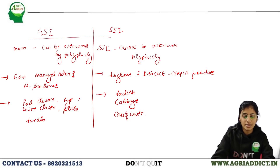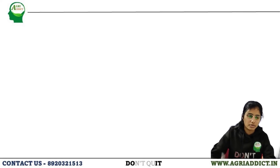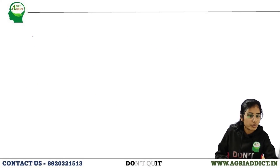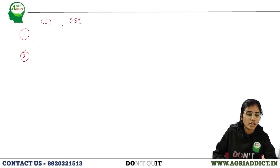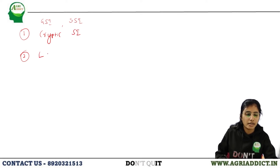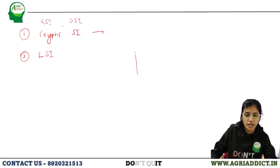Those are the major key differences between sporophytic and gametophytic self-incompatibility. In addition, there are two more types of self-incompatibility: cryptic self-incompatibility and late-acting self-incompatibility.